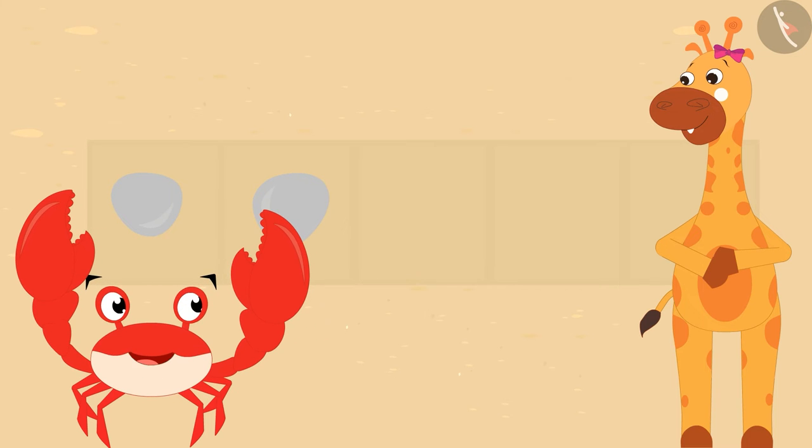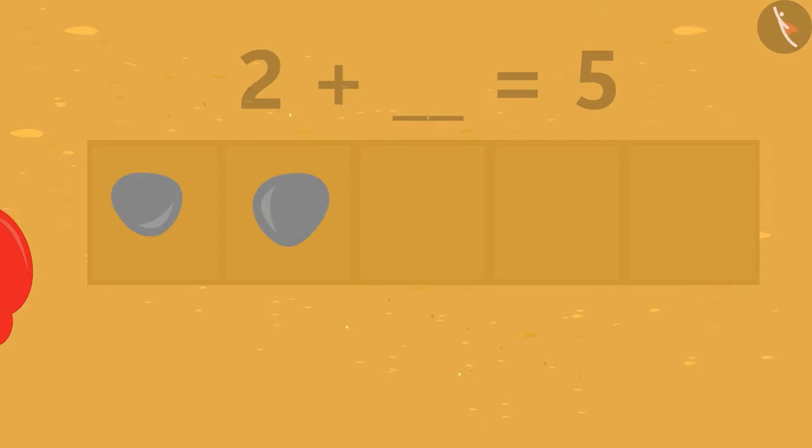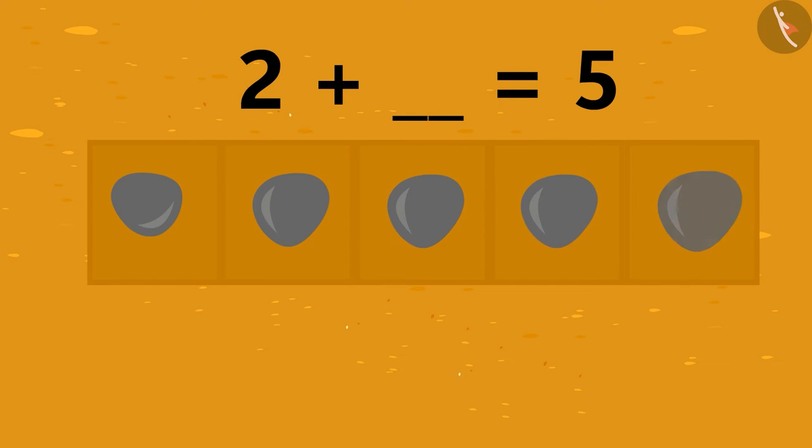In two frames I have kept one stone each. Come, let's keep stones in the remaining frames and then we will be able to answer your question. One, two, three! See Crabby, we kept stones in three more frames and now all the five frames have stones.